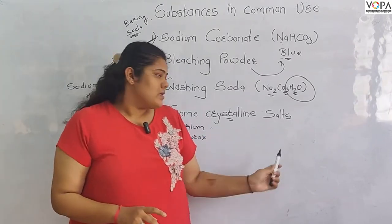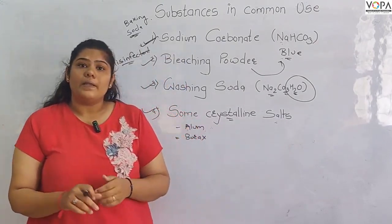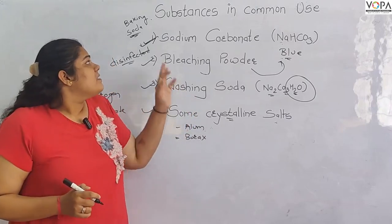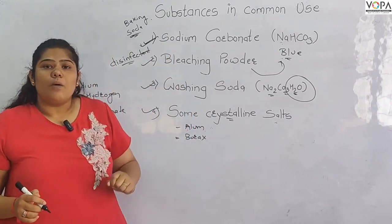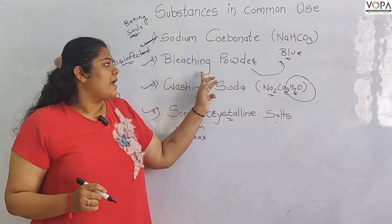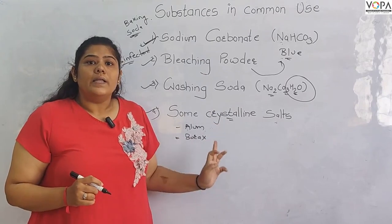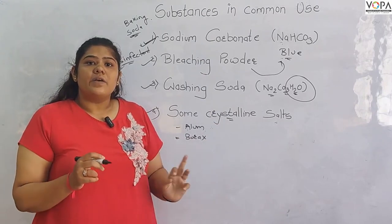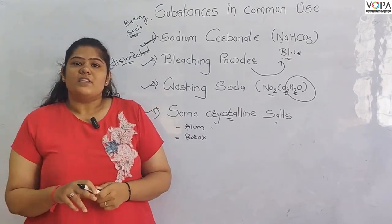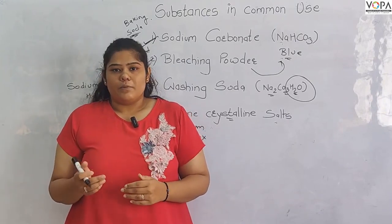What is soap? It is a salt. It is used for cleanliness. Substances in common use include many chemicals. We use them for cleanliness and based on their properties. In the next part, we will continue learning.